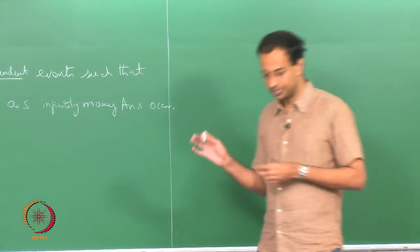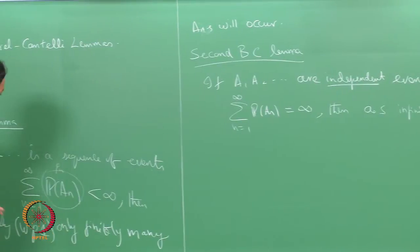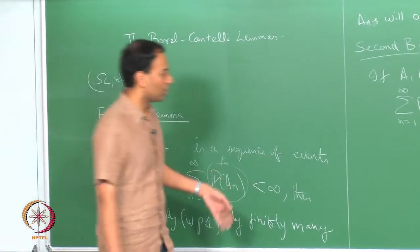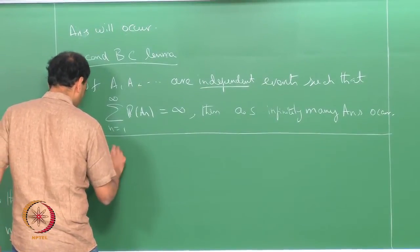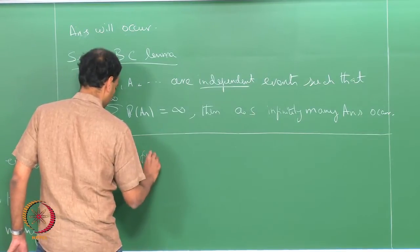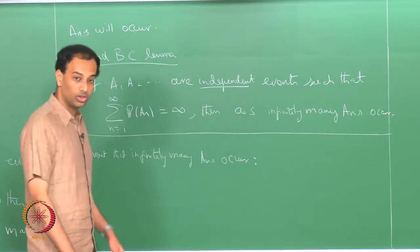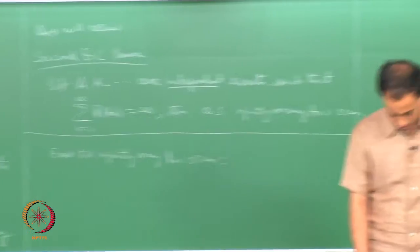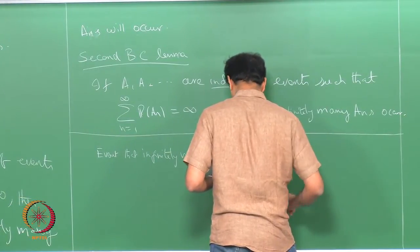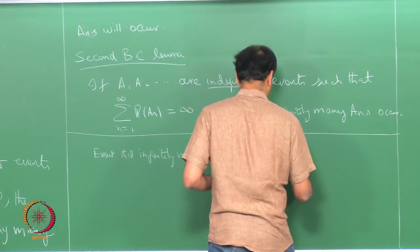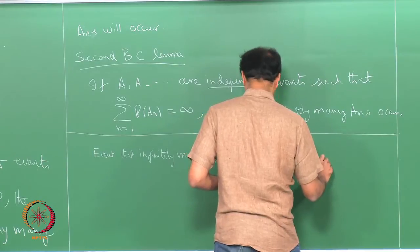I will introduce some notation to make this more formal. Both lemmas talk about the event of only finitely many or infinitely many A_n's happening. I will actually denote that — there is a particular notation for it. The event that infinitely many A_n's occur is written as the intersection over n equals 1 through infinity of the union over i equals n through infinity of A_i.